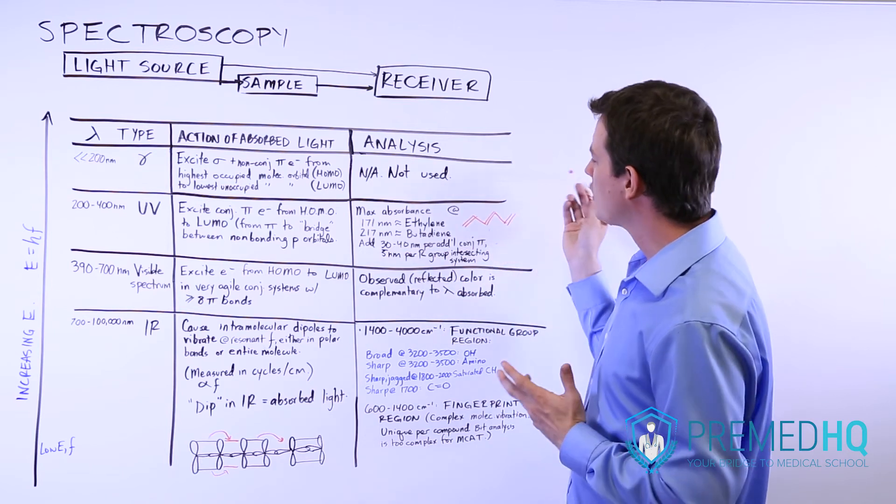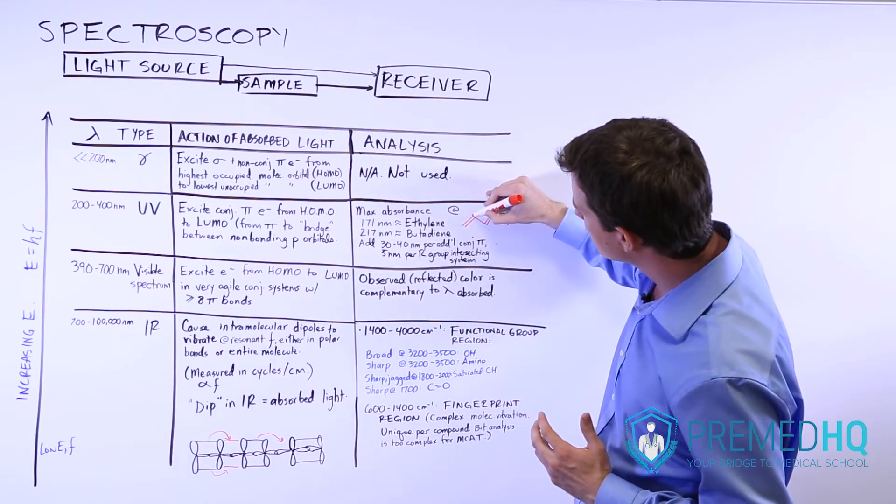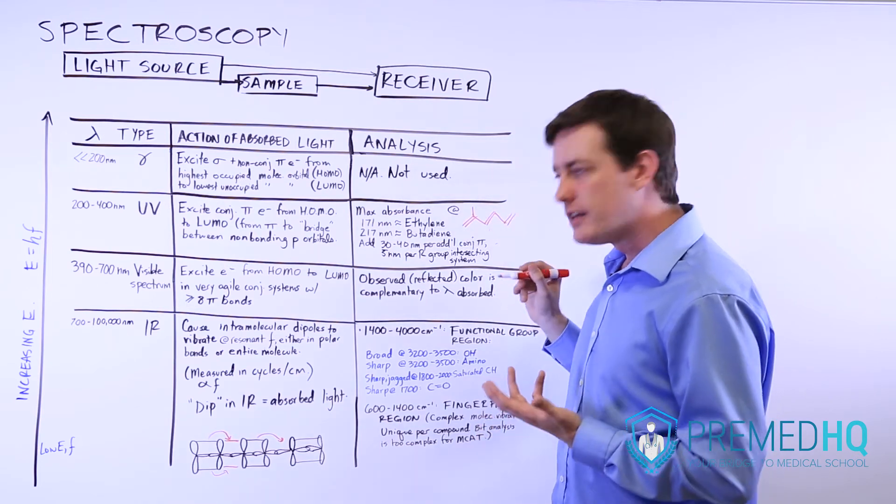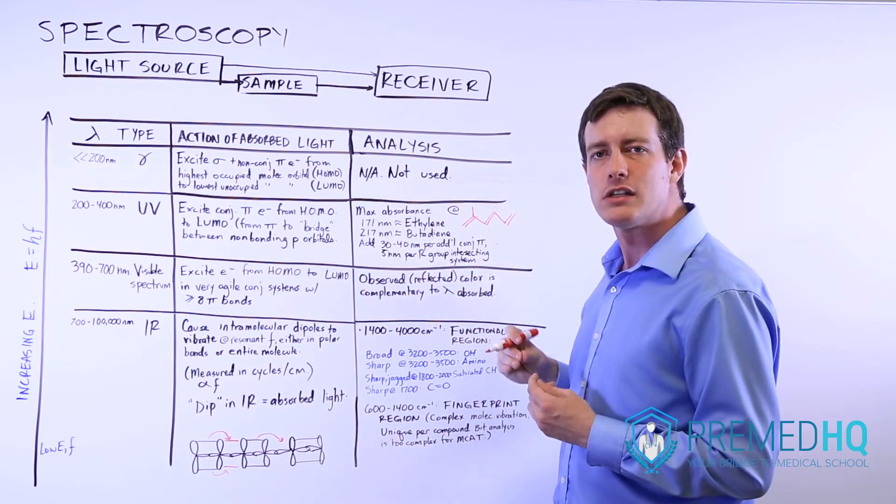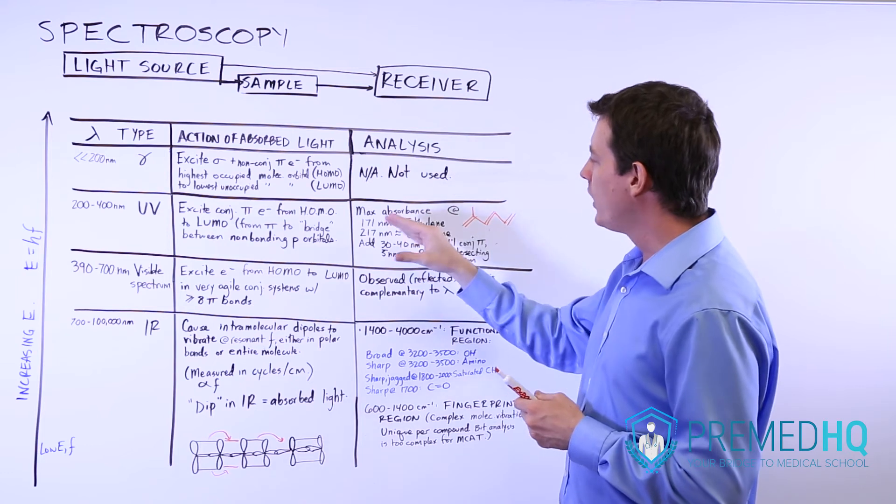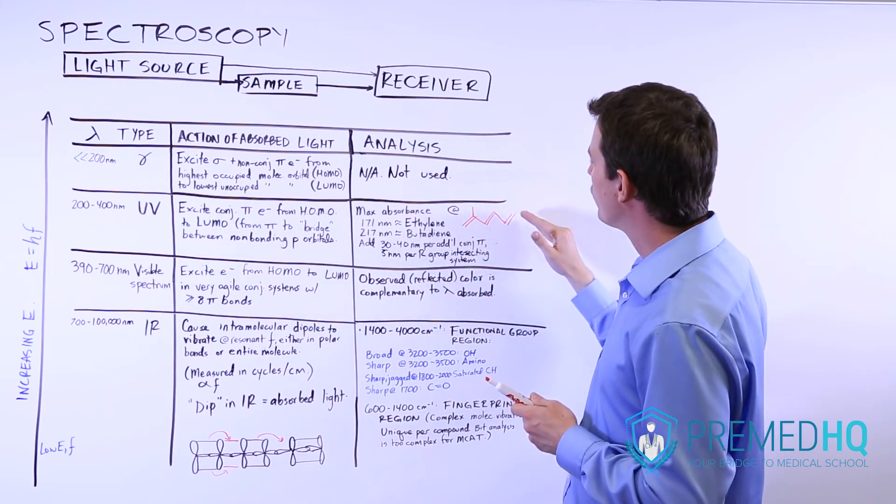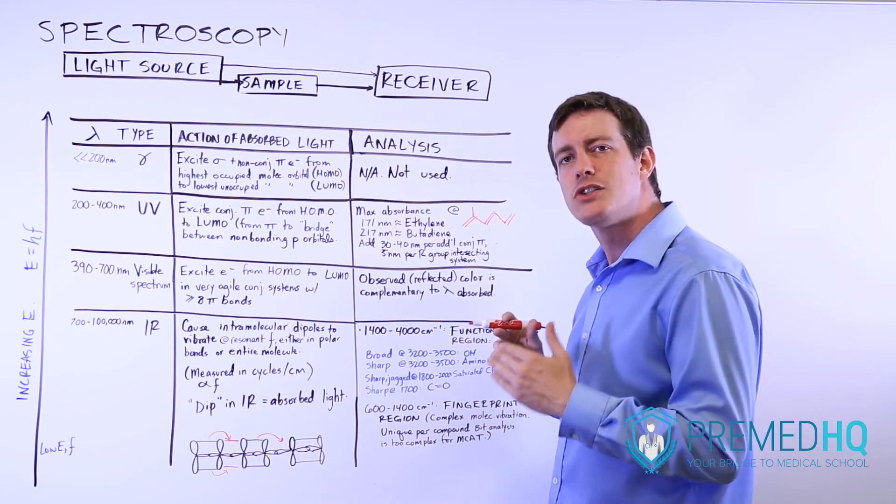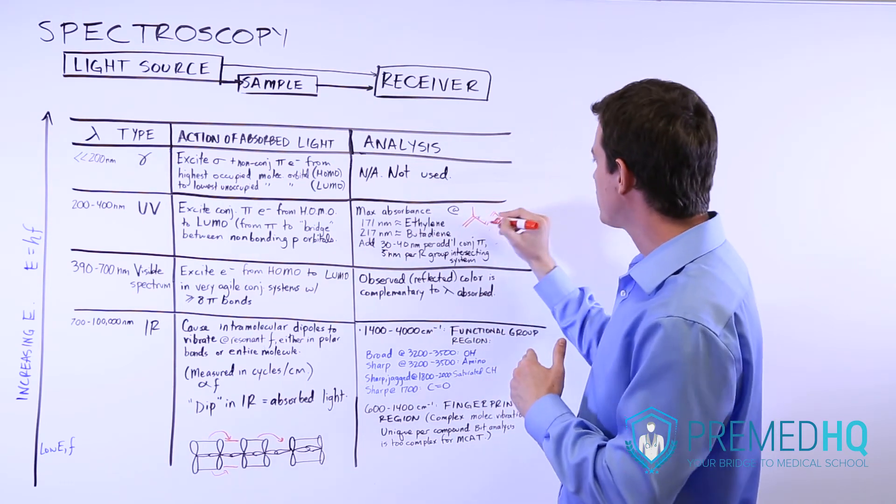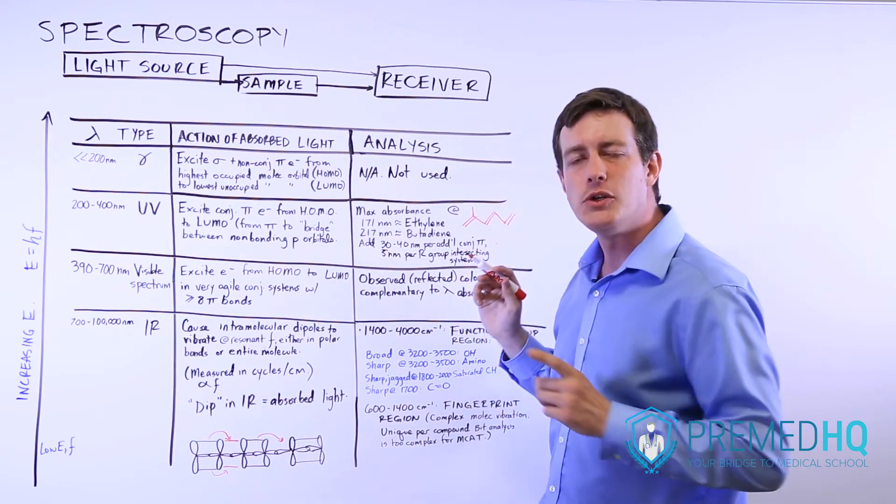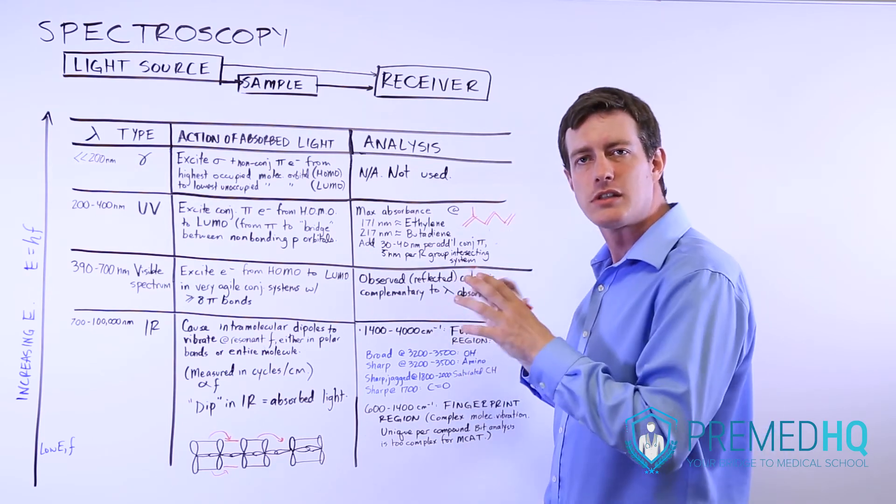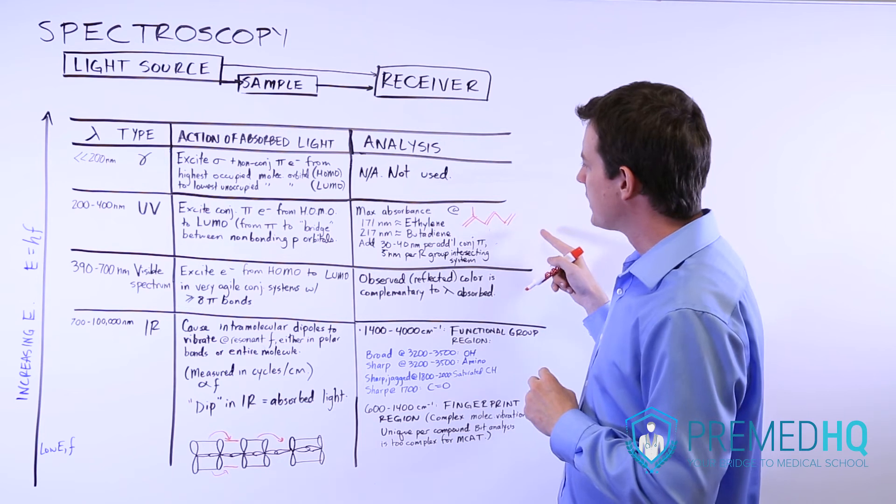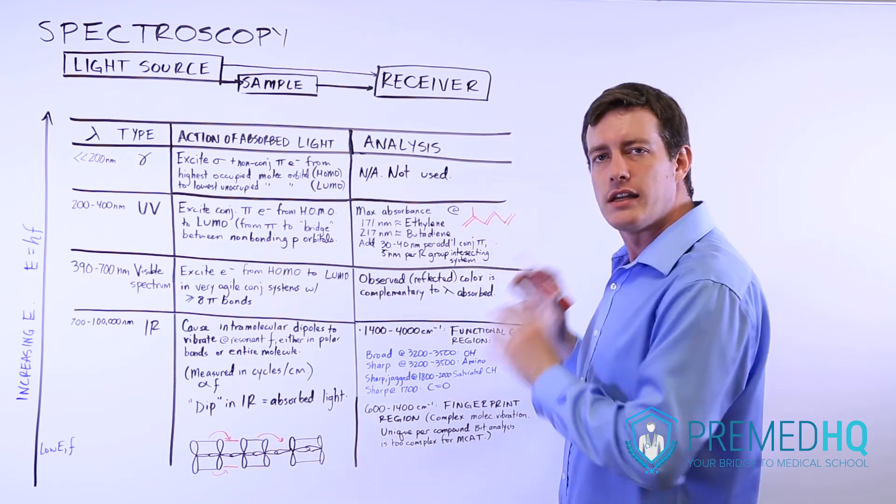Also, if there are R groups intersecting the system, so let's just say here that we had some methyl group attached there, then we'll add another five nanometers. And so what is going on is as you increase the size of the conjugated system, it becomes easier and easier to find some electron in one of these double bonds that you can excite into its lowest unoccupied orbital. And the larger the system gets, the easier it is to do that.